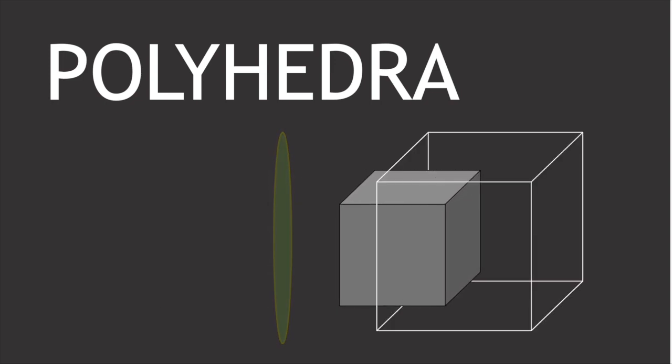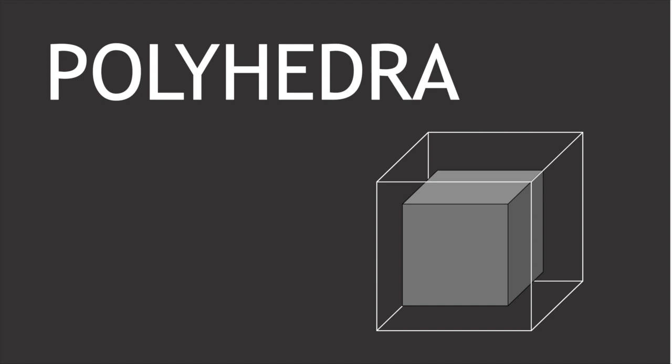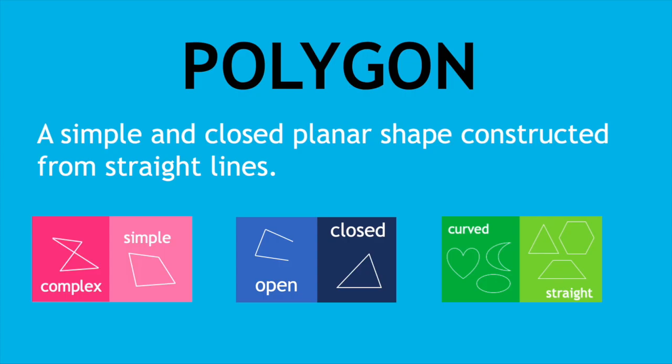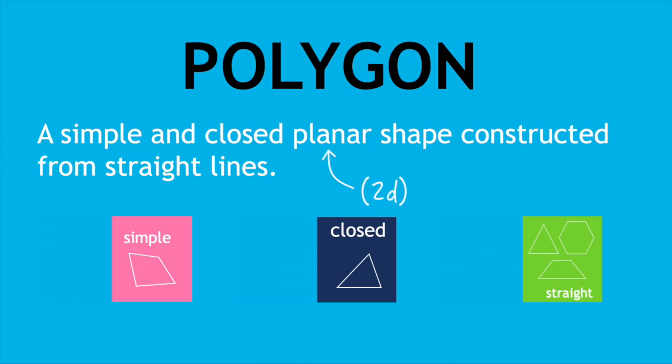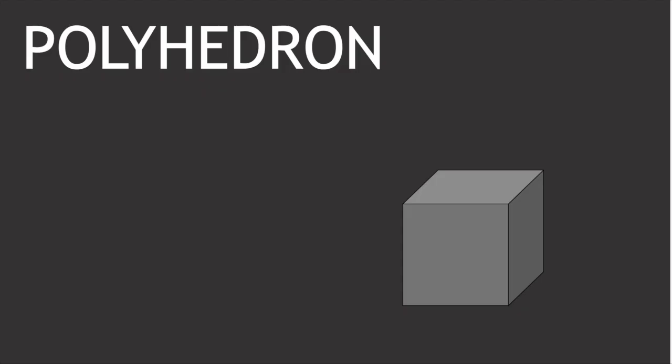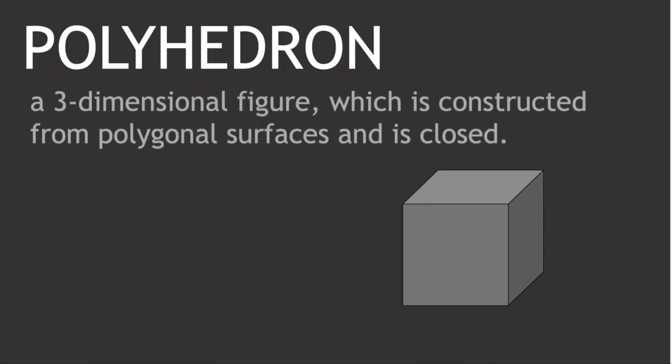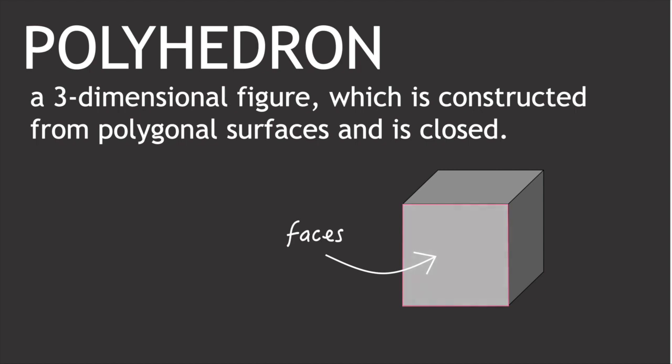A polyhedron is essentially the extension of the polygon definition to three dimensional space. So whereas a polygon is a 2D closed shape with straight sides, a polyhedron is a three dimensional closed shape whose faces are polygons. We usually use the term faces or surfaces instead of sides in order to distinguish these from the edges.